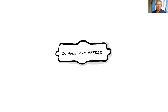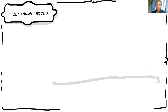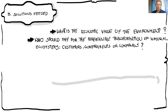We said that there is a need to put the environment components in a calculation system of economic efficiency. The first question is: what is the economic value of the environment? That's the problem, because most of those components which are used during activities, during production and human activities, are really difficult to put in value, especially in a monetary value.